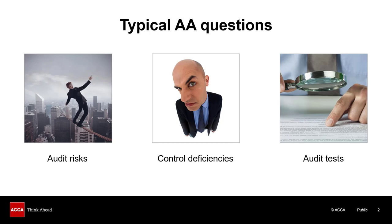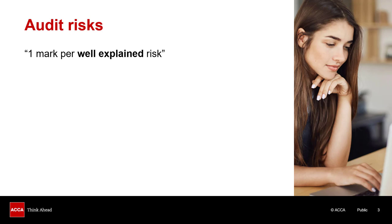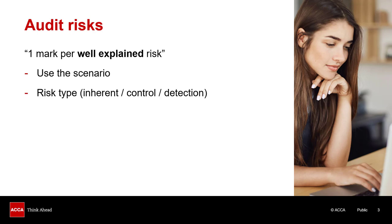Let's start with audit risks. In a typical audit risk question, the marking scheme will say there's one mark per well-explained risk. But what makes a risk well-explained? It can be really hard to know when you're reviewing your own answers. The first thing you're looking for is that your risk needs to start with a fact from the scenario.